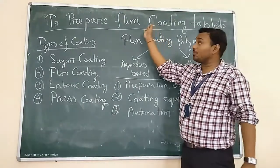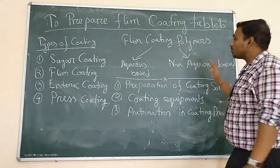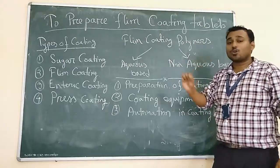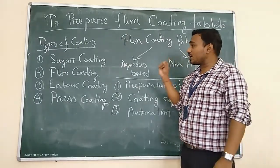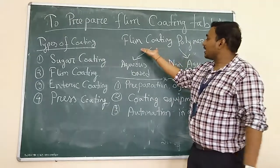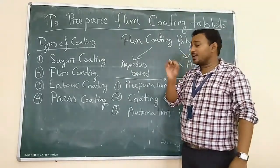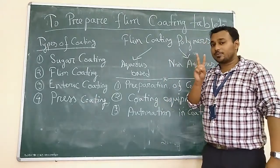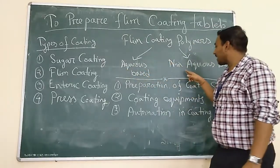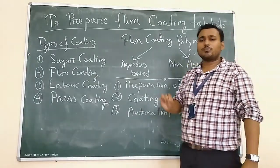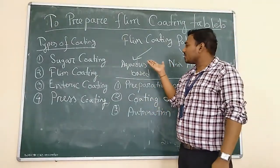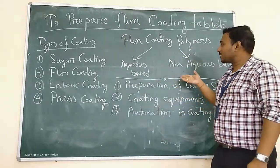Now we are discussing about film coating. What is film coating? Film coating is a very thin type of coating material — that is, polymers. We are using polymers in the range of 20 to 200 micrometers. We are using that very thin layer to prepare the formulations. In film coating, there are mainly two types of base polymers: first one is aqueous base polymer, and another one is non-aqueous base polymer. Various polymers like cellulose derivatives and HPMC derivatives are used for the coating materials.